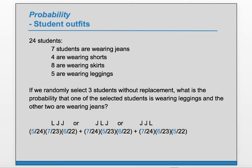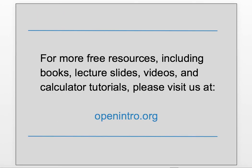So let's take the first term and multiply it by 3. If we evaluate that on the calculator, we get 0.0519. That's it for this video. For more free resources, check us out at openintro.org.